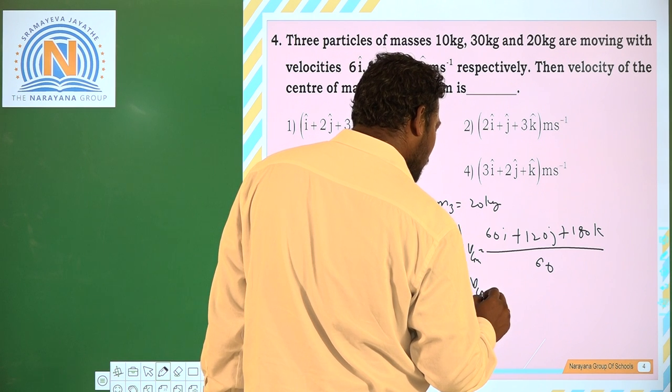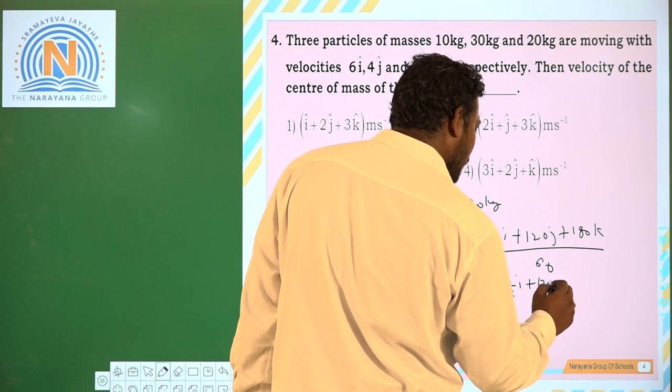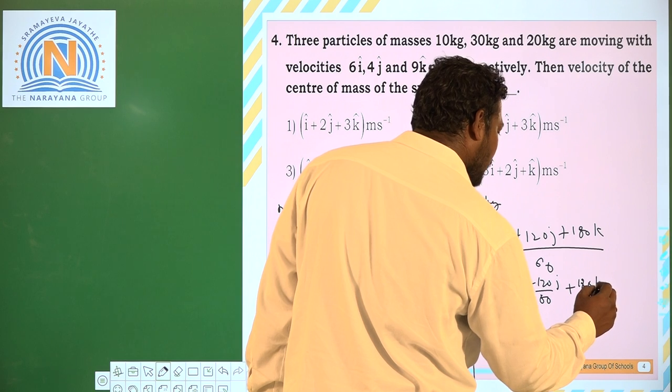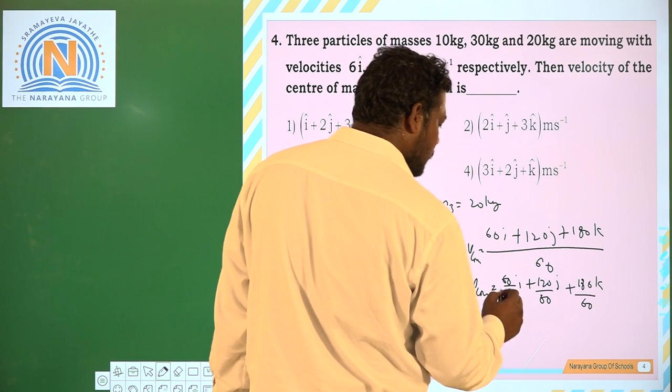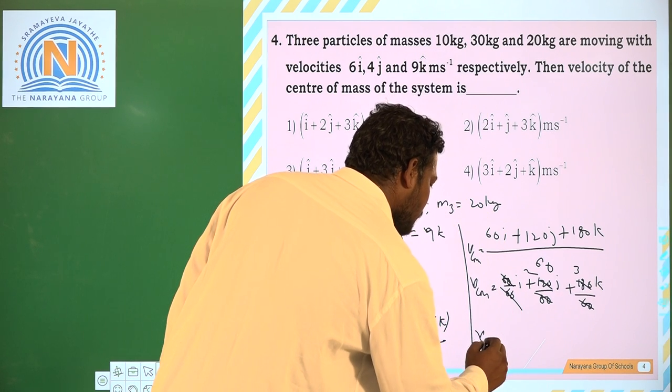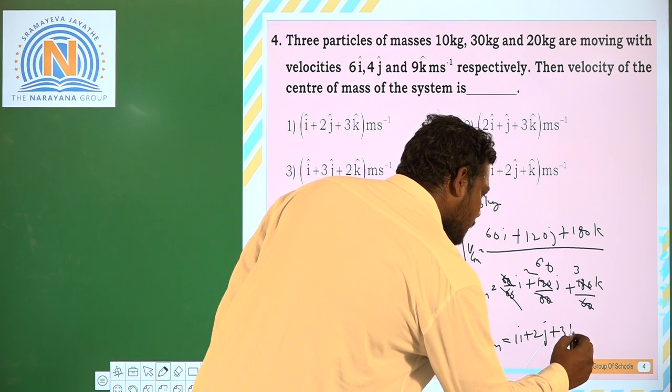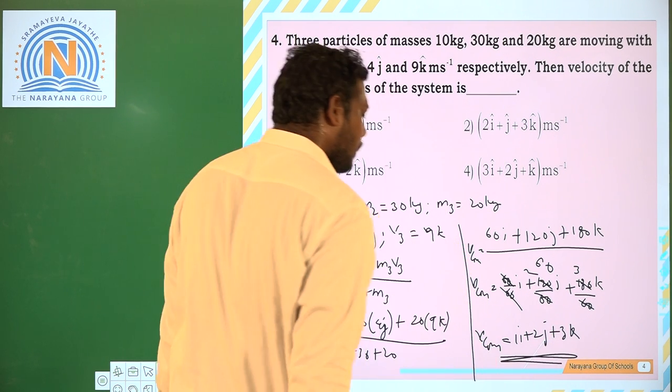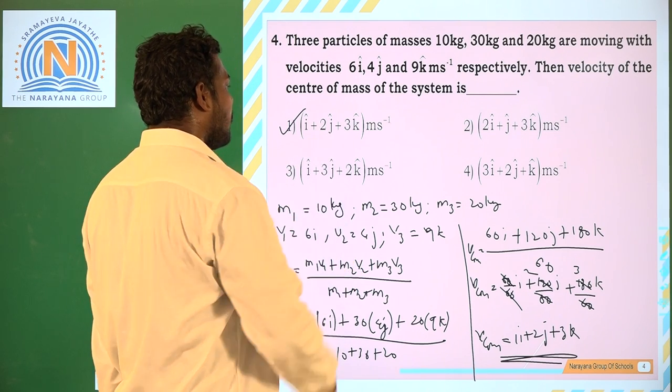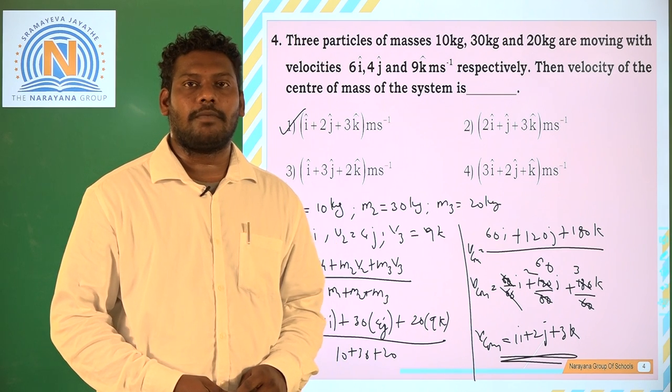1s are, 2s are, 3s are. So VCOM = 1i + 2j + 3k. VCOM = 1i + 2j + 3k. So this is our assignment for history students. We'll meet in the next lesson. Thank you.